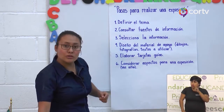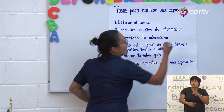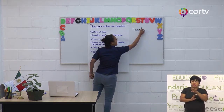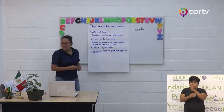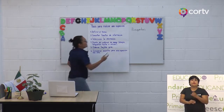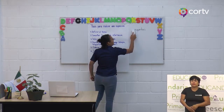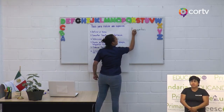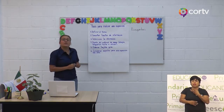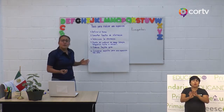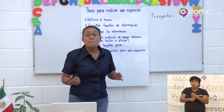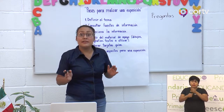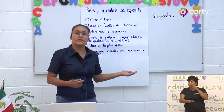Para definir un tema, necesitamos hacernos preguntas. Estas pueden ser preguntas generales o preguntas específicas. ¿Qué tema te gustaría abordar? Puede ser una pregunta general. Y tenemos algunas preguntas específicas, como ¿cuántos años vive un ser humano? Aproximadamente. O bien, ¿cuál es el ciclo de vida de las mariposas? Como lo vimos en la sesión anterior.